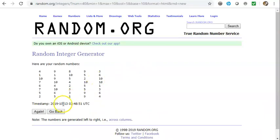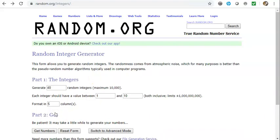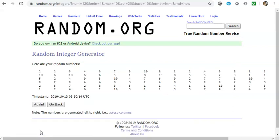In this case, for random.org, I'm going to generate 120 numbers, one through 10, and put them in 20 columns. Here is one example. All right, go back to the slides.